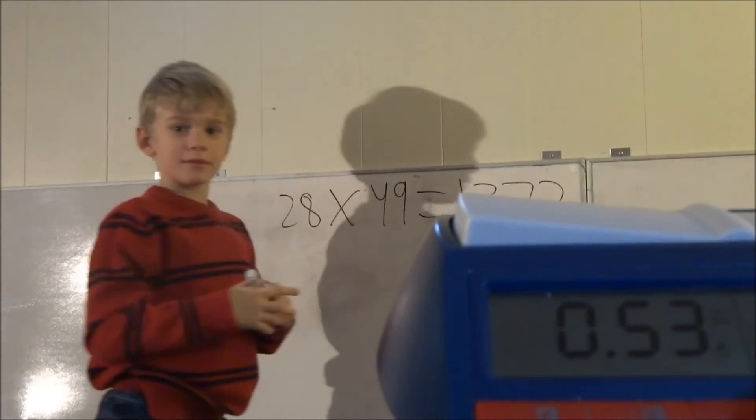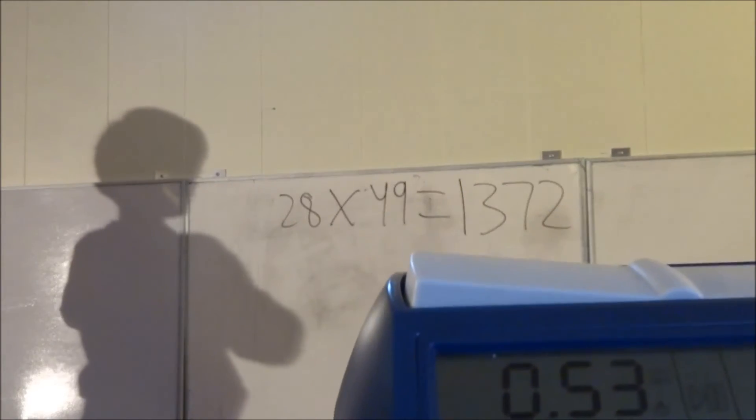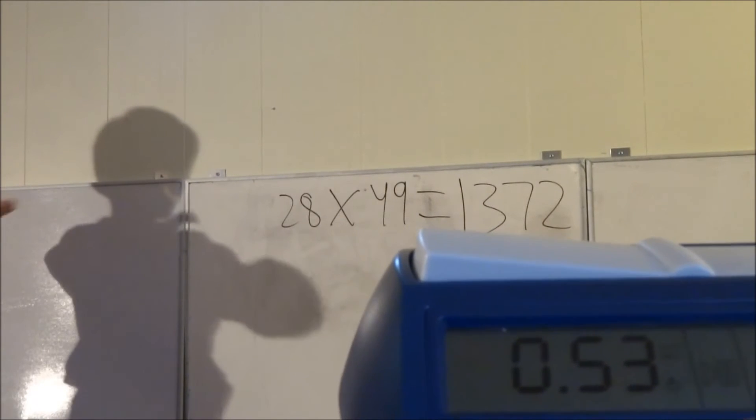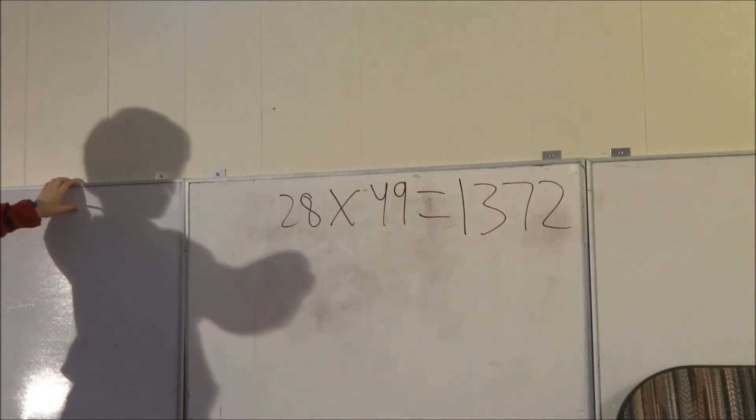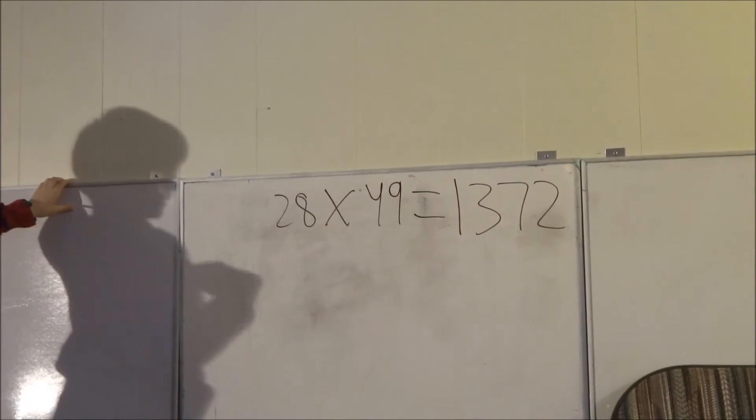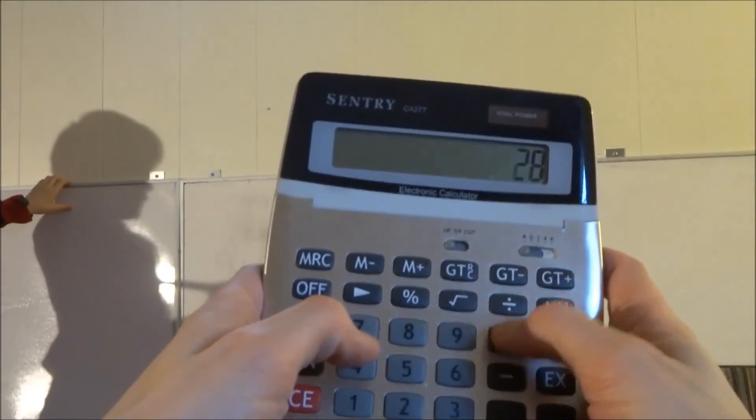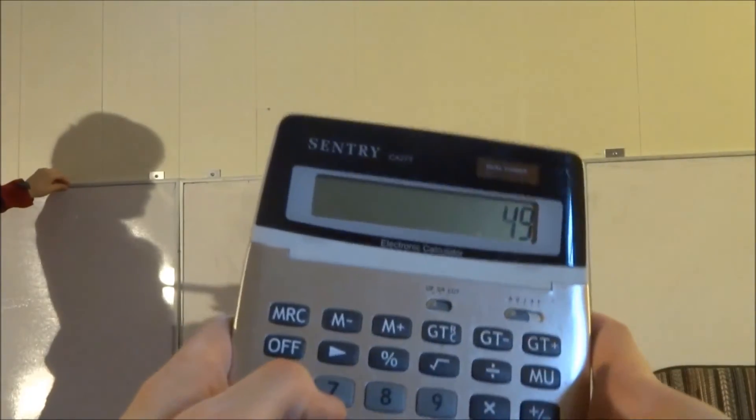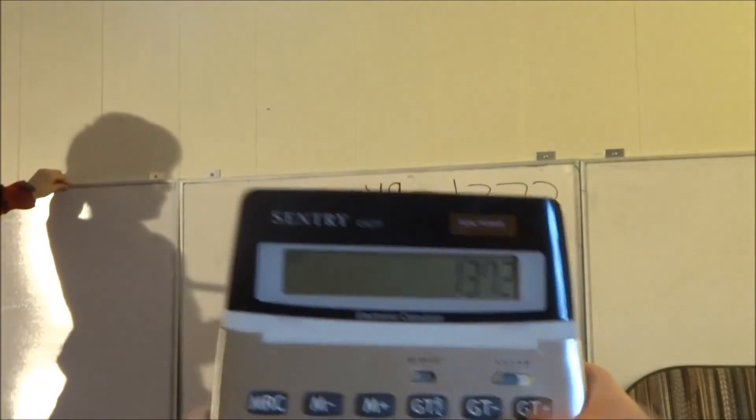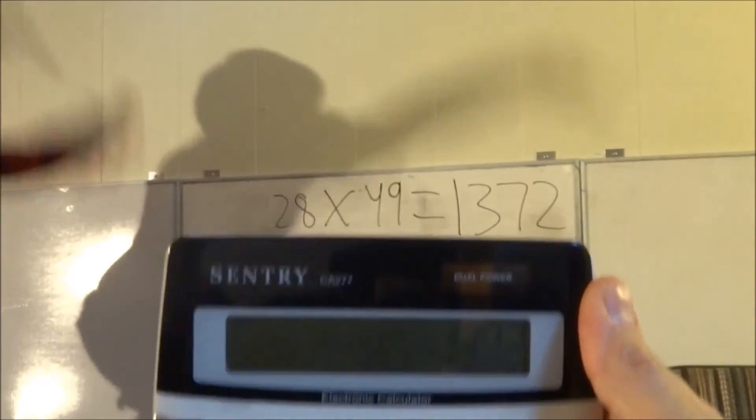Done. Whoa. How did you do that so fast? Okay, you took seven seconds. And you had 53 left. Let's see if you got it right. Okay, 28 times 49 is 1, 3, 7, 2. Great job.